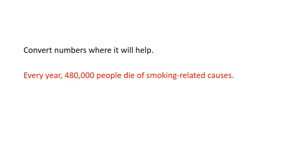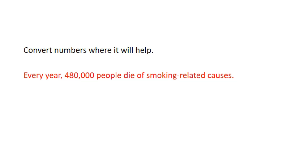Remember that you can use raw numbers, ratios, or percents to express data. If you tell me that 480,000 people die of smoking per year, I'm thinking that sounds like a lot, but is it really? How many people is this compared to all the deaths? So the CDC also says that this is one in five deaths per year in the US. On my own, using my math skills, I could paraphrase or restate this as a percent, because one in five is equal to 20%.